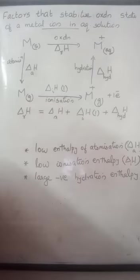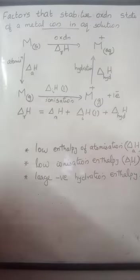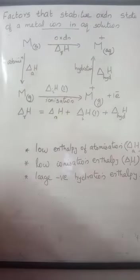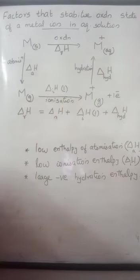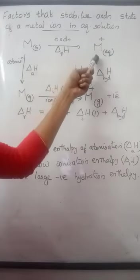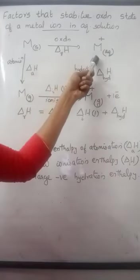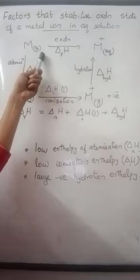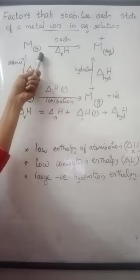Let us discuss what are the factors that affect the stability of an oxidation state of a metal ion in aqueous solution. Consider the oxidation of a metal into an oxidation state M+ in aqueous solution. This reaction involves three steps.